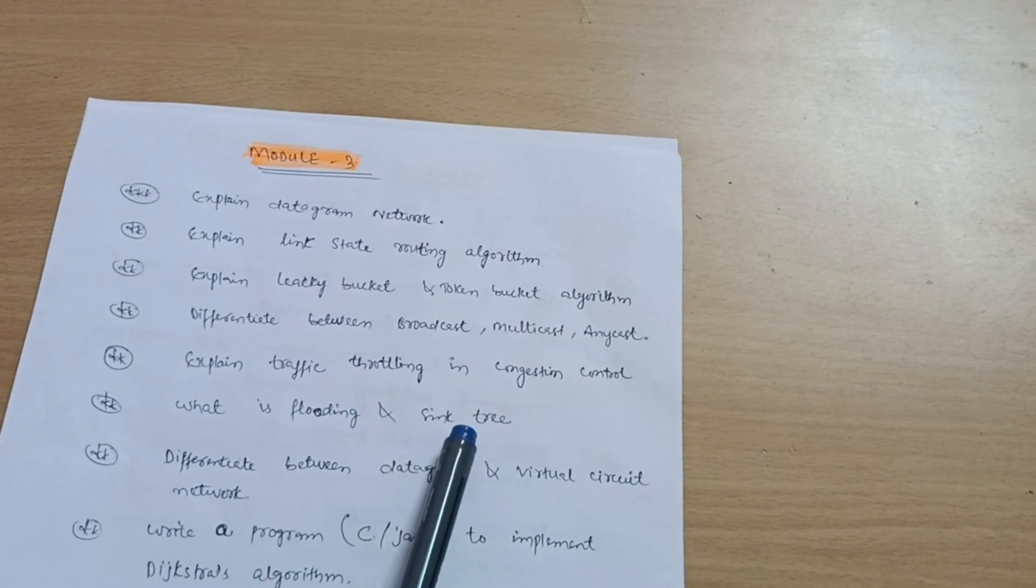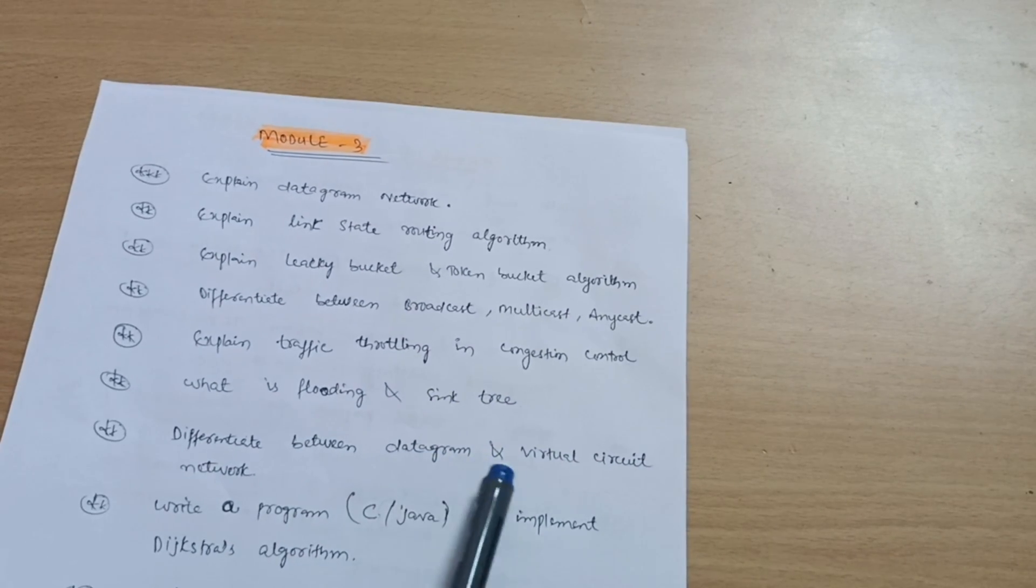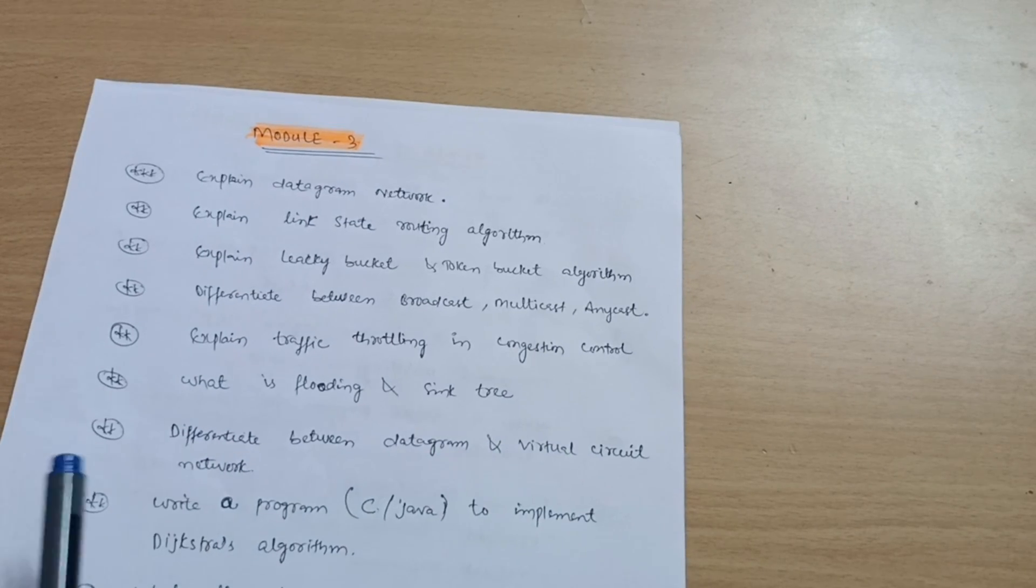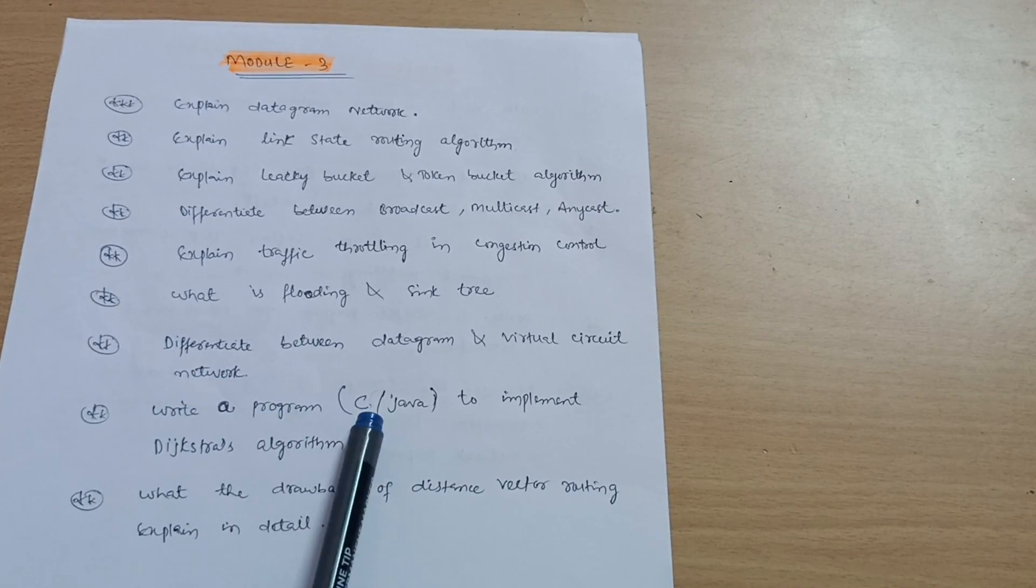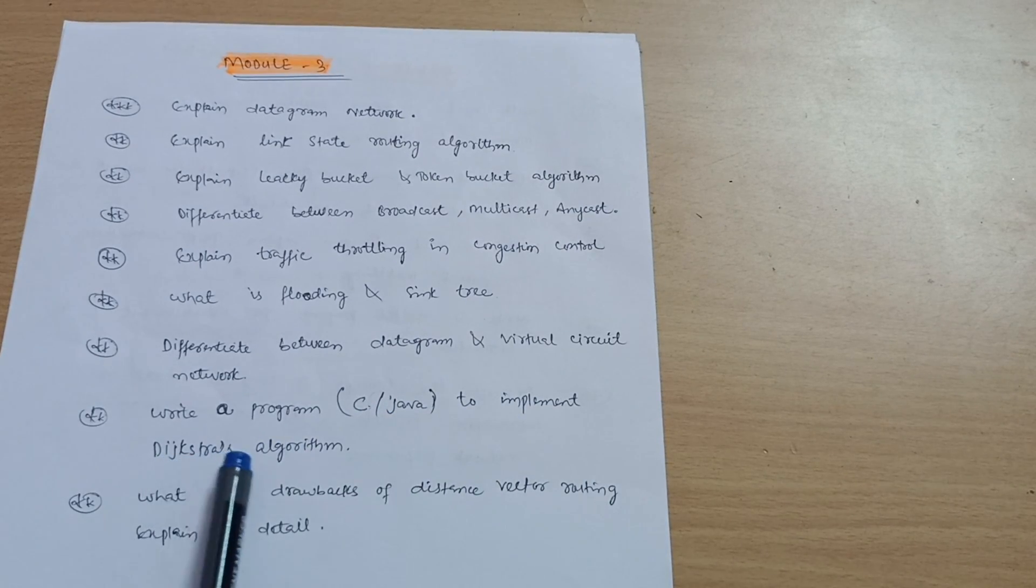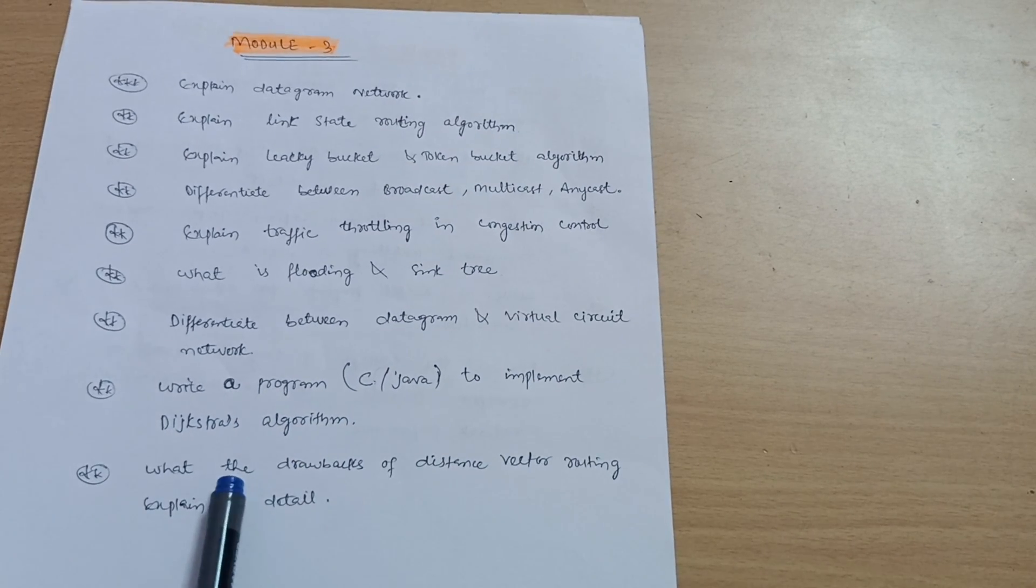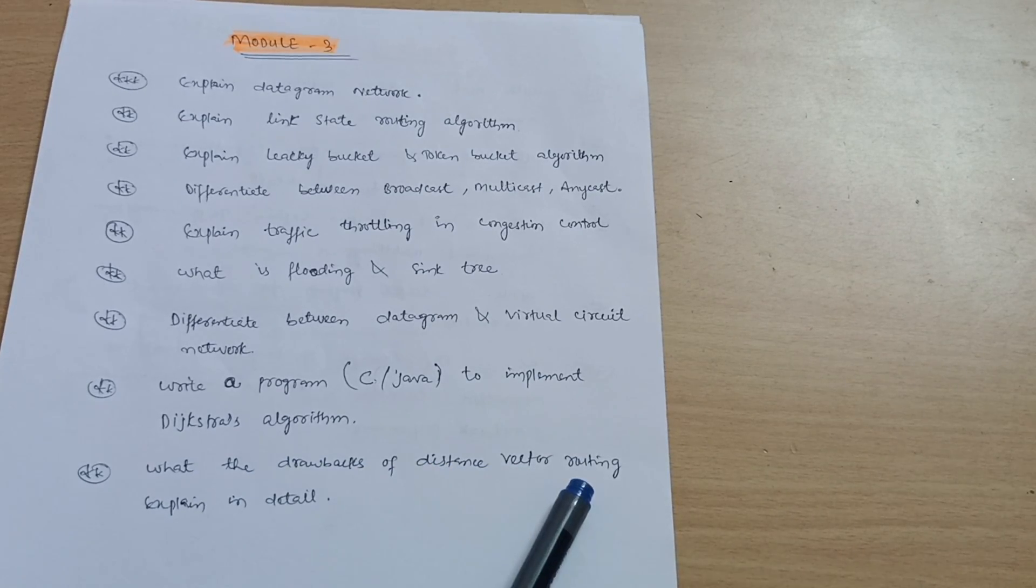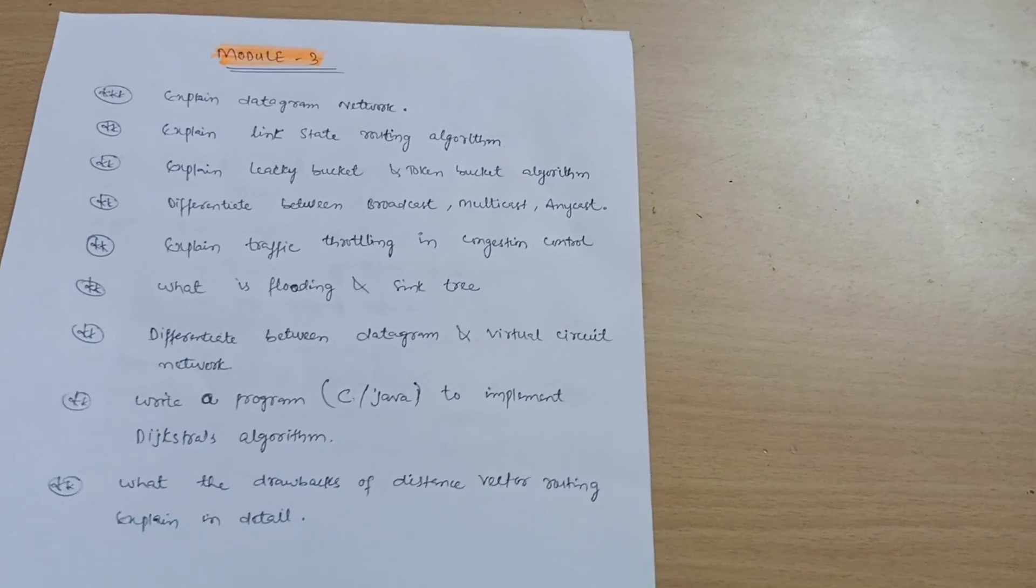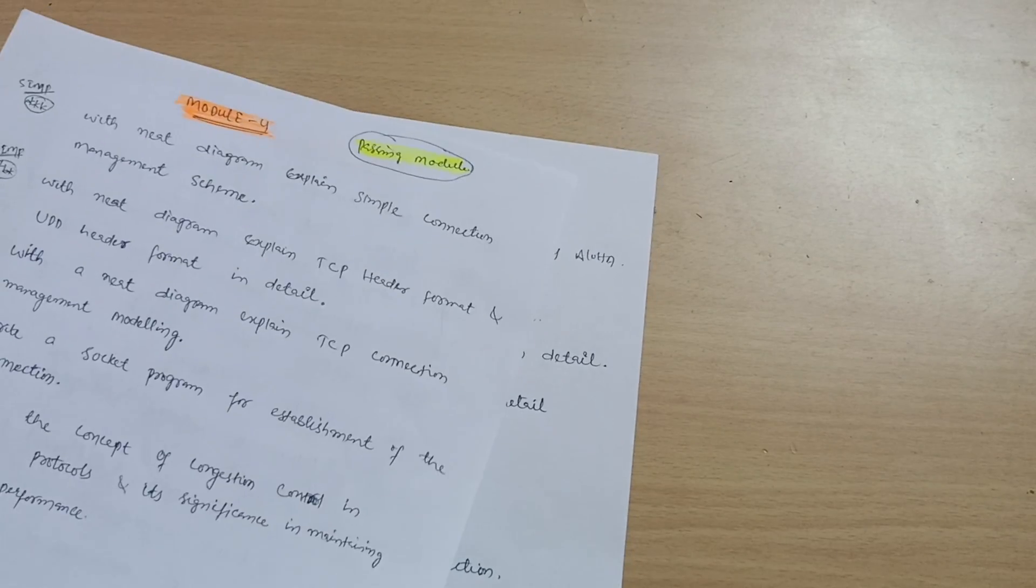What is flooding and spanning tree? Differentiate between datagram and virtual circuit network. Write a C or Java program to implement Dijkstra's algorithm. Write the drawbacks of distance vector routing and explain in detail. This is all about Module 3.